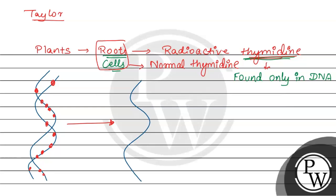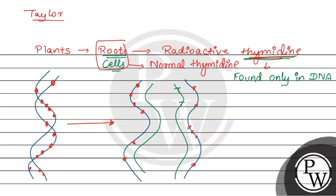Parental DNA जो है वो पहले separate होता है. इसको template रखते हुए हमारा new DNA synthesize हुआ. तो अभी क्या हुआ — यहाँ पे हमें radioactive thymidine मिला, और यहाँ पे भी था. तो new DNA जो है उसमें normal thymidine है — radioactive नहीं है.